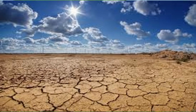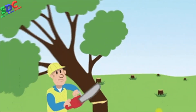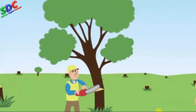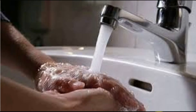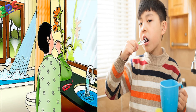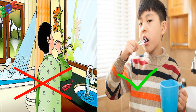Especially during summer, scarcity of water is mainly due to climatic changes, increased population, increased human demand, and overuse of water. So we should not waste water. Avoid brushing teeth and washing hands with running tap water — instead, use a mug to save water.